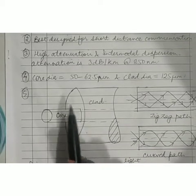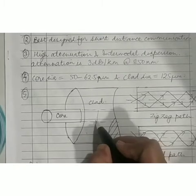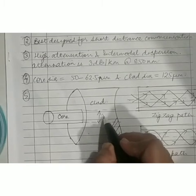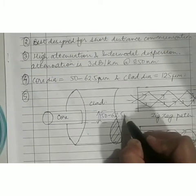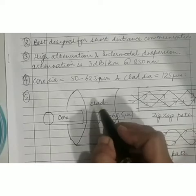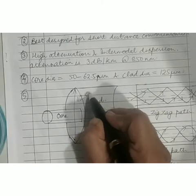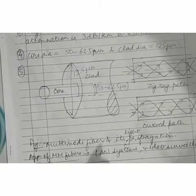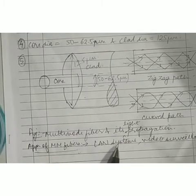Since there are multiple modes traveling inside the multimode fiber, the core diameter has to be comparatively bigger than single mode. It is in the range of 50 to 62.5 micrometers, and the cladding diameter can go up to 125 micrometers. Multimode fiber is more effectively used for short distance communication like LAN systems or video surveillance systems.